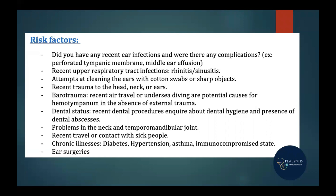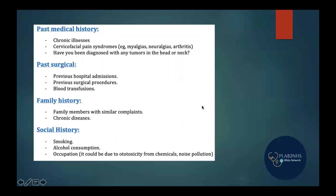In chronic illness history, ask specifically about diabetes, hypertension, asthma, and immunocompromised states. This helps rule out malignant otitis externa, which is very commonly associated with diabetes and immunocompromised patients. Always ask about previous ear surgeries, as surgical history of the ear is important in otalgic presentations.